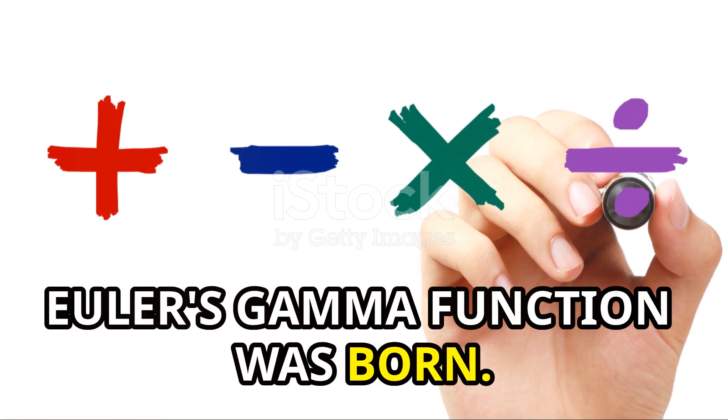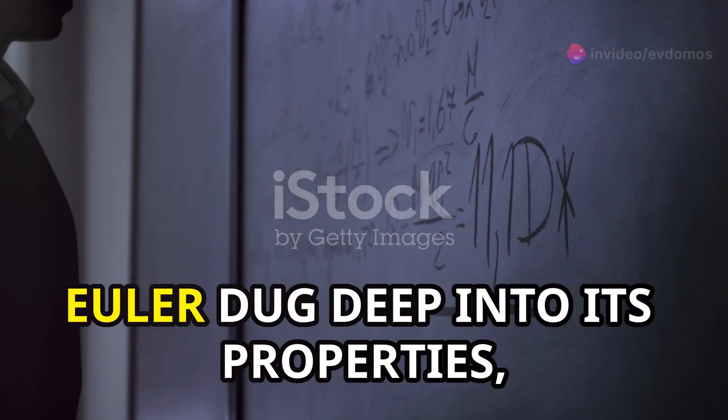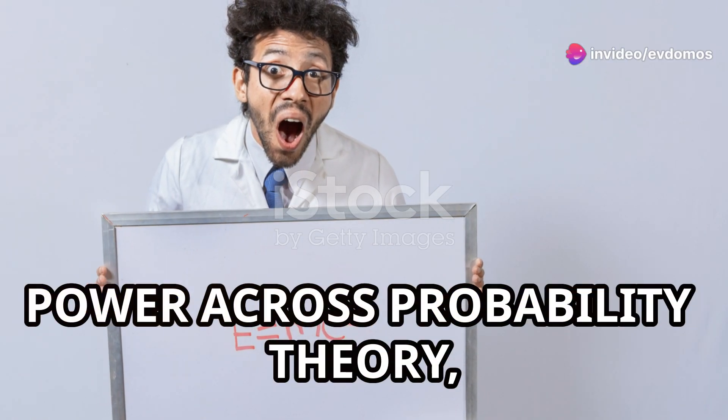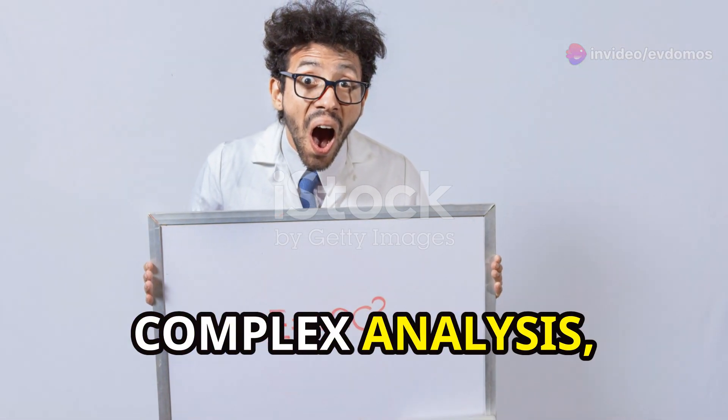Euler's gamma function was born. He didn't stop there. Euler dug deep into its properties, establishing theorems and showcasing its power across probability theory, complex analysis, and even physics.